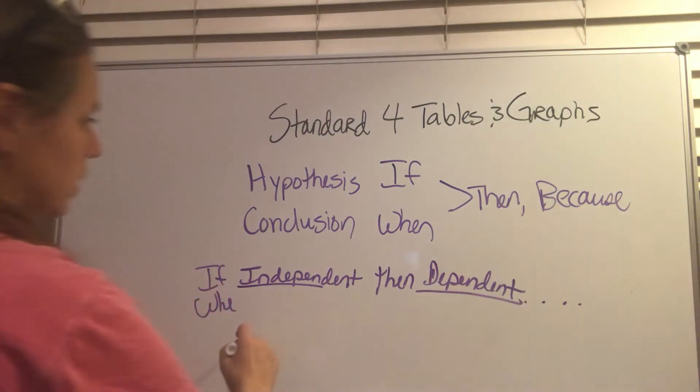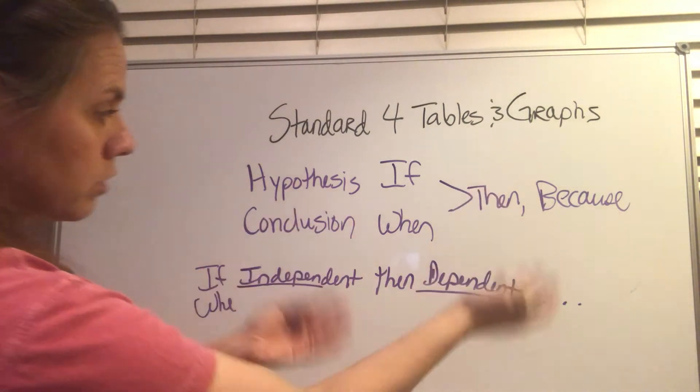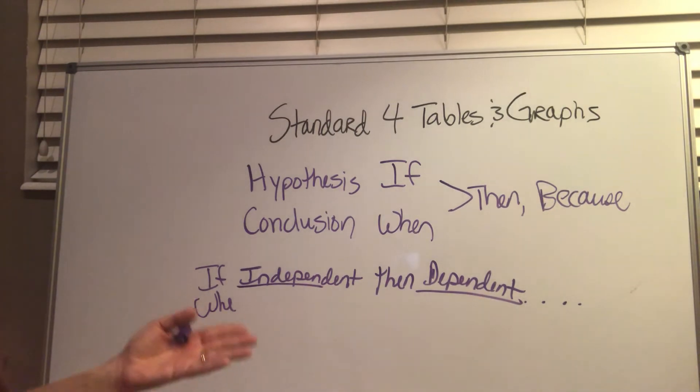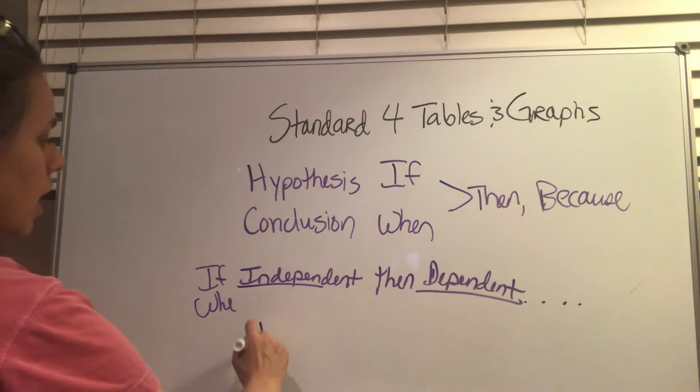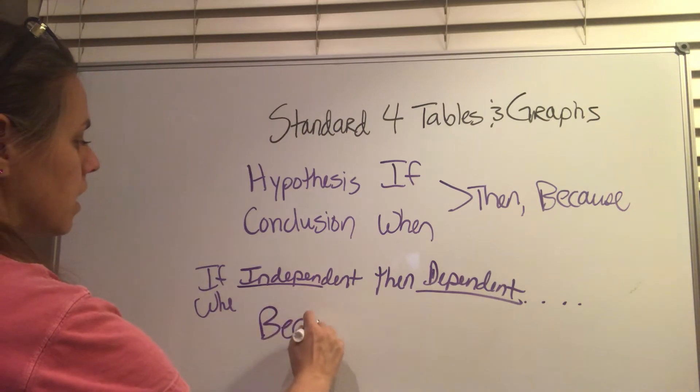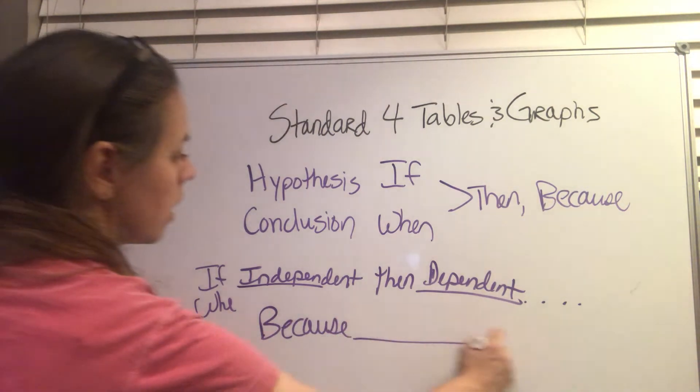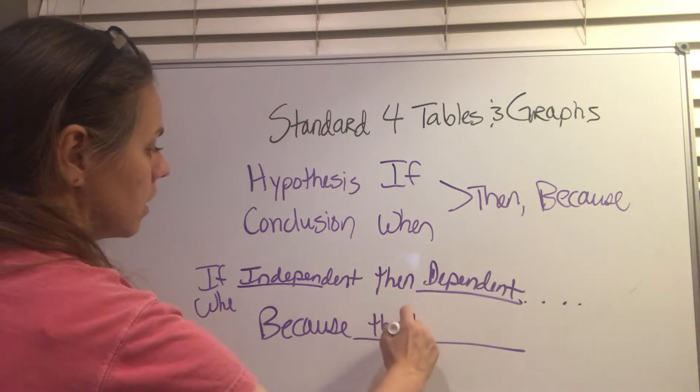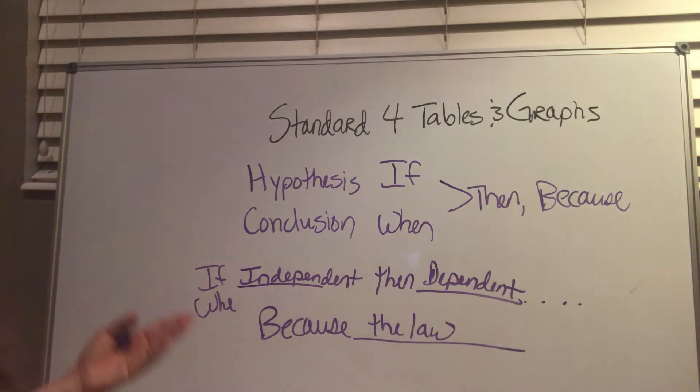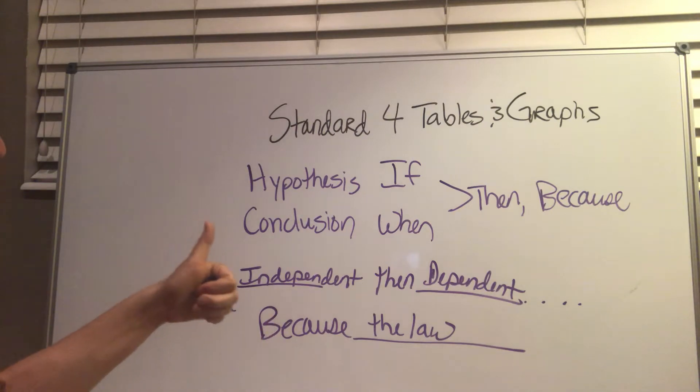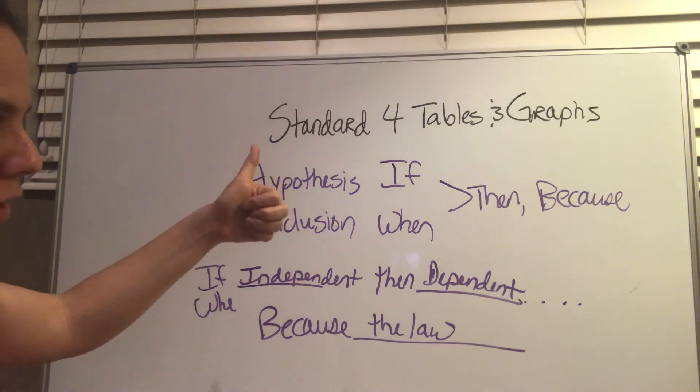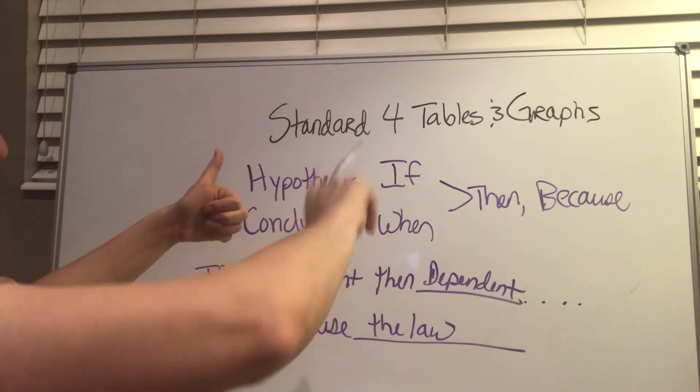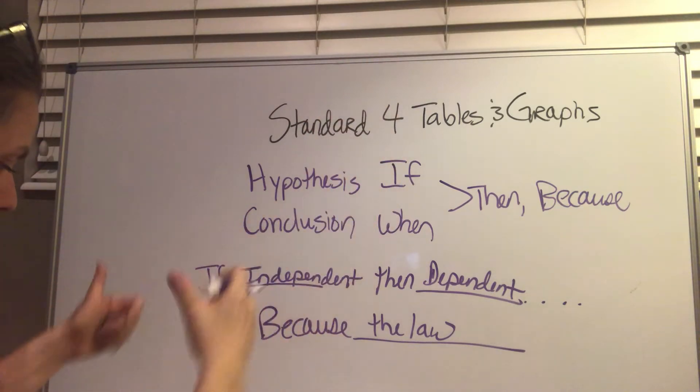And then it's your dependent variable. And you say what it's going to do, whether it's going to increase it or decrease it. That always seems to be what we're talking about, increasing something or decreasing something. And then your because has to quote the law. This is the law, and the law, all you're saying is because when you add this independent variable, then this is what happens to the dependent variable. And that's the proportional.